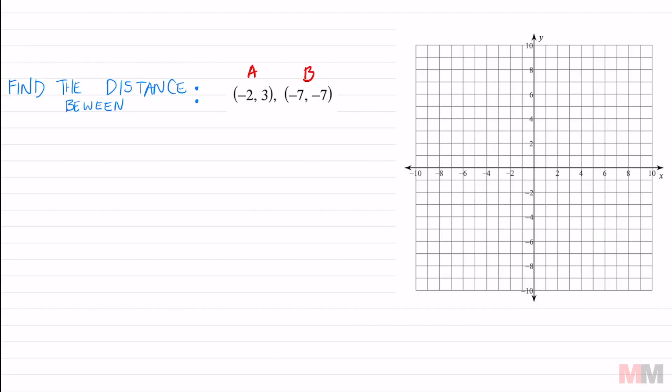A is negative two, three. Let's visually plant those so you guys can see what this triangle is gonna look like. A is negative two, three, and that's my x and y. B is negative seven, seven, negative seven, negative seven, somewhere back here. And that's my x and y.